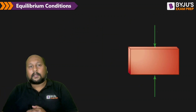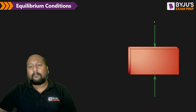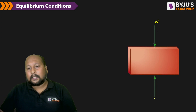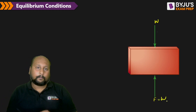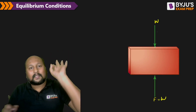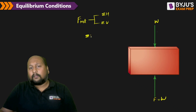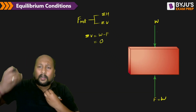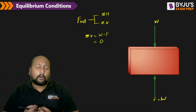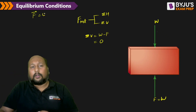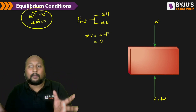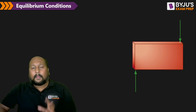Let us take an example. Suppose there is a block with weight W acting downward and a force F acting upward, exactly equal to the weight. Is this body in equilibrium? Yes, because the total vertical force is W minus F, which equals zero. There is no horizontal force, and the body won't rotate, so the total moment is also zero. Both conditions are satisfied — the body is in equilibrium.